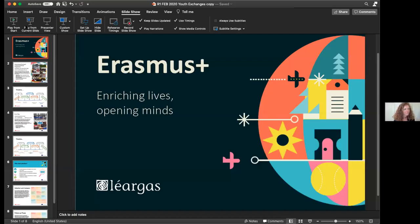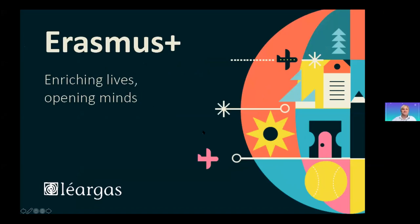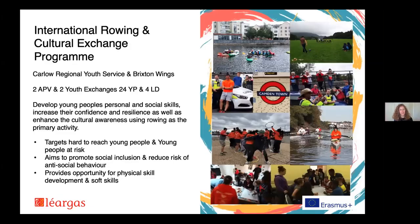My name is Audrey and I'm the youth exchange project officer in Largas. I'm going to share a couple of projects — I didn't pick projects that were using amazingly creative ideas, but they were really good, practical projects in their approach. The first project is the International Rowing and Cultural Exchange Program, a youth exchange between Carlo Regional Youth Service and Brixton Wings.